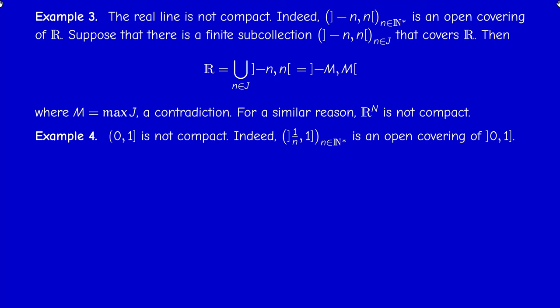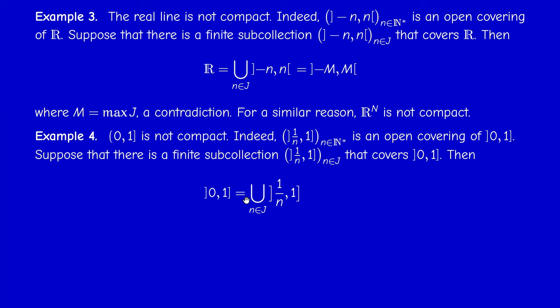Example four: the semi-open interval (0, 1] is also not compact by the same reasoning. Consider the open covering {(1/n, 1] : n in N*}. If there were a finite sub-covering, we could write (0, 1] as a finite union of such intervals. Since this is an increasing sequence and 1/n decreases to 0, the finite union equals (1/M, 1] for some maximum M — which cannot equal (0, 1]. Contradiction.